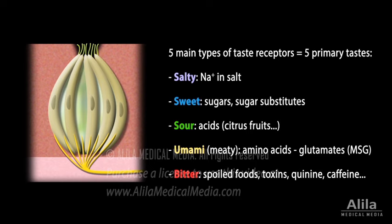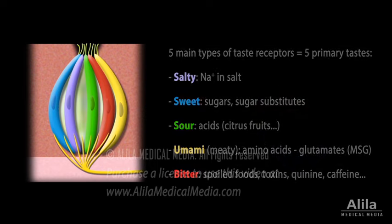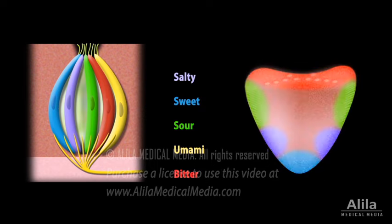Each taste cell has receptors for only one type of taste, but a taste bud is typically composed of a variety of cells detecting different tastes. All primary tastes can be perceived throughout the tongue, but some regions are more sensitive to a certain taste than others.